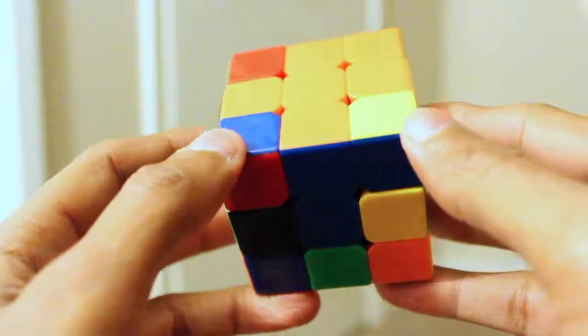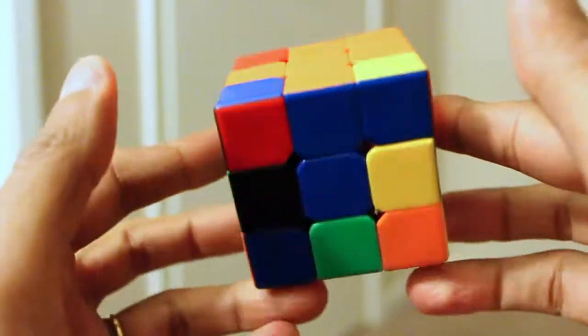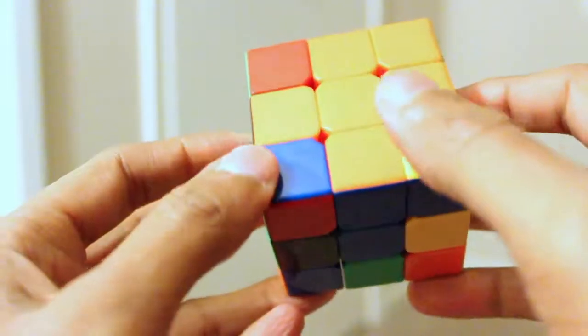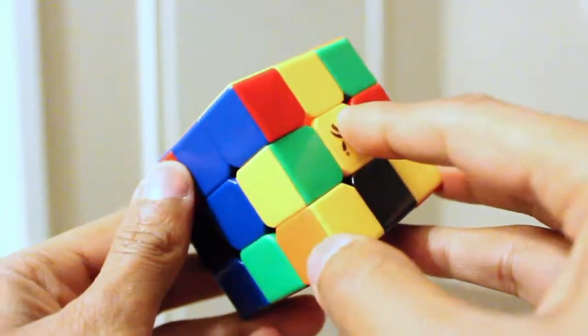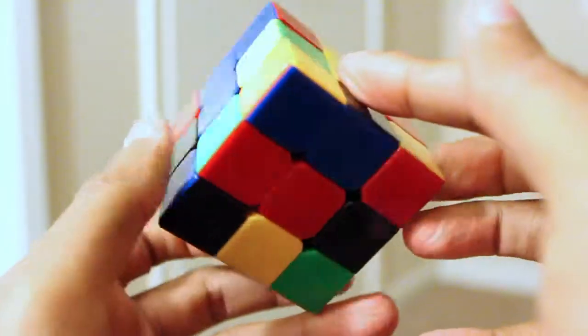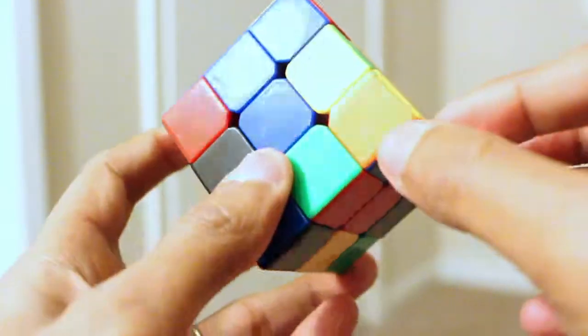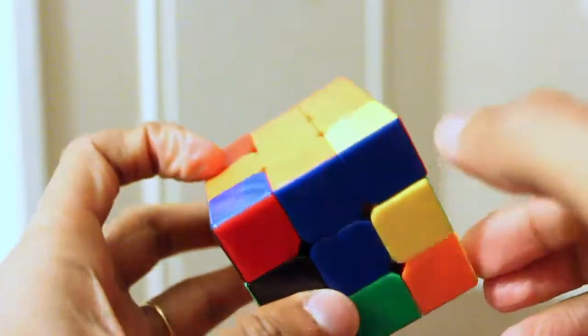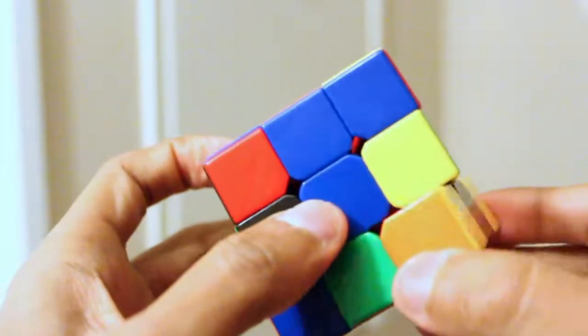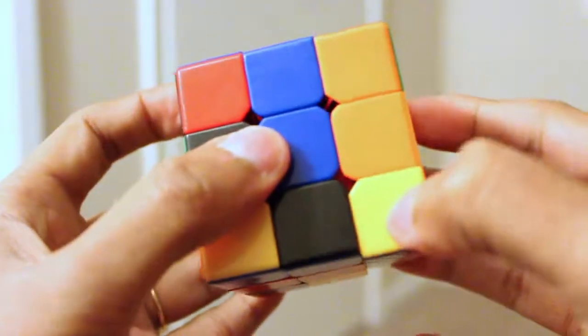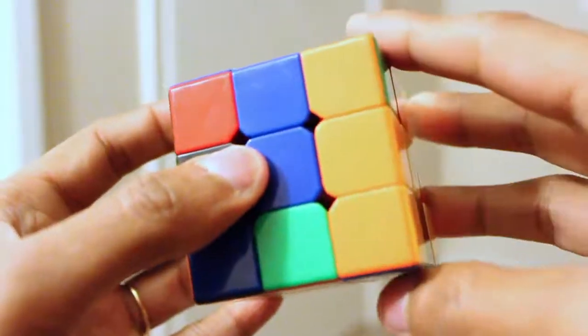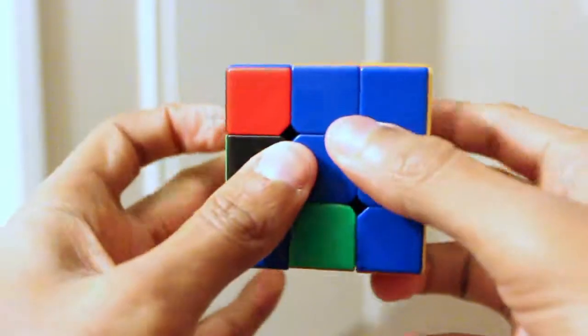Okay, I'll show you how to solve the corners now. We have orange, blue, and yellow - find the piece where it is. Here it is. We need to move this one right here, so we just turn it to this side, bring this down, turn it this side, and lift it up.